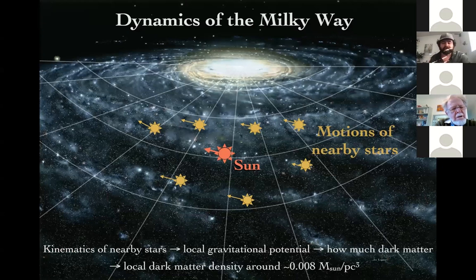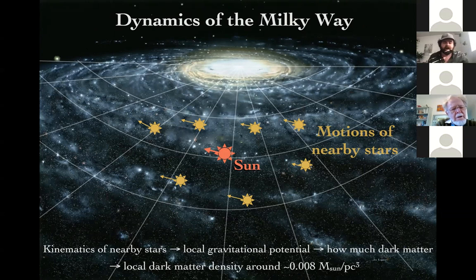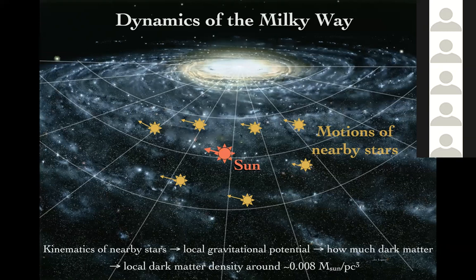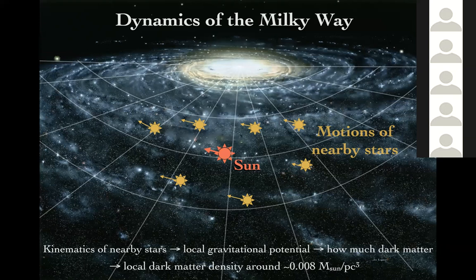Equally important but less often discussed is the dark matter inside the Milky Way — particularly dark matter right here around the solar system. It works in the same way: looking at the kinematics of stars tells you something about the gravitational potential. Once you account for all the stars, dust, and gas, whatever's left over is dark matter. We do see a non-zero contribution, around 0.008 solar masses per parsec cubed around the solar system.